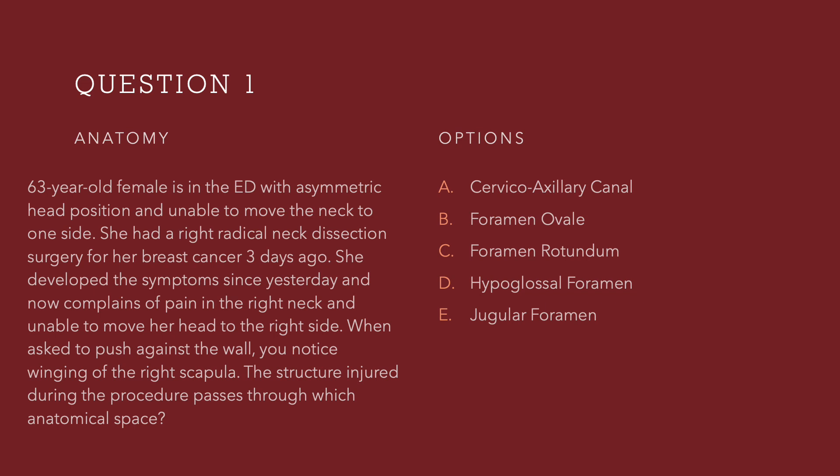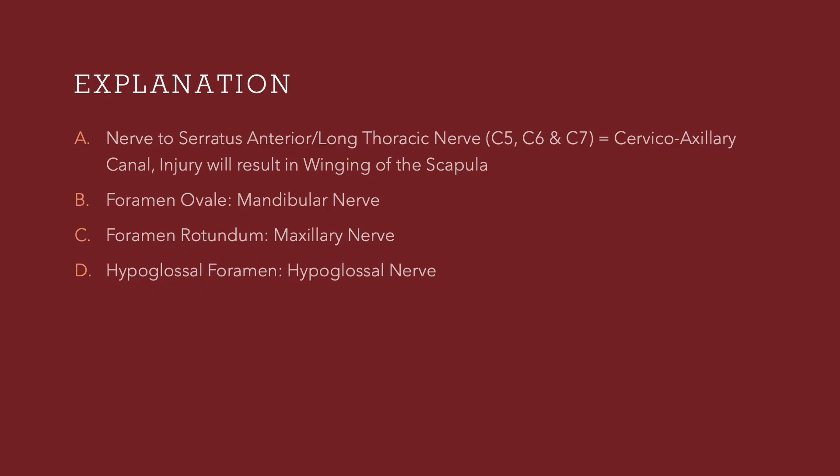I hope you have made your decision. Let us look at the explanation now. The nerve to serratus anterior — the first option, cervical axillary canal — the nerve to serratus anterior, also known as the long thoracic nerve, formed by roots of C5, C6, and C7, can give rise to winging of the scapula, and that structure passes through the cervical axillary canal.